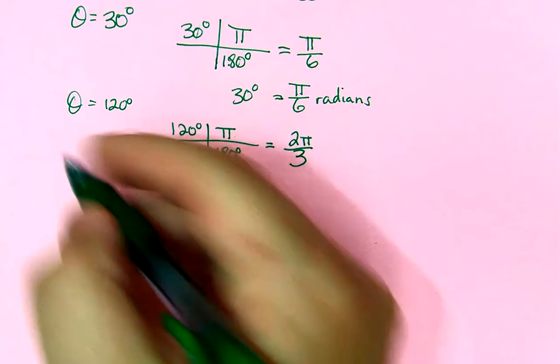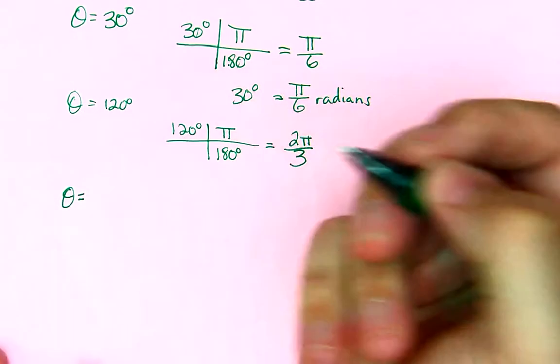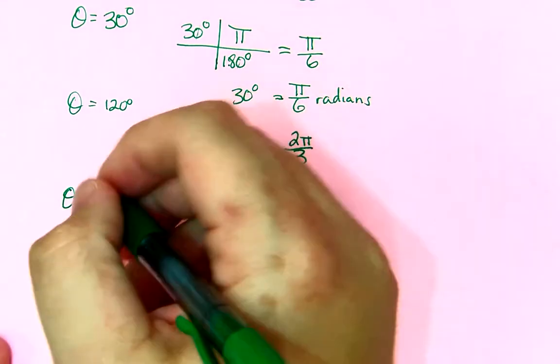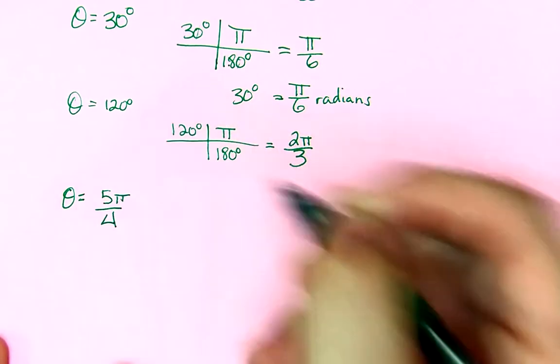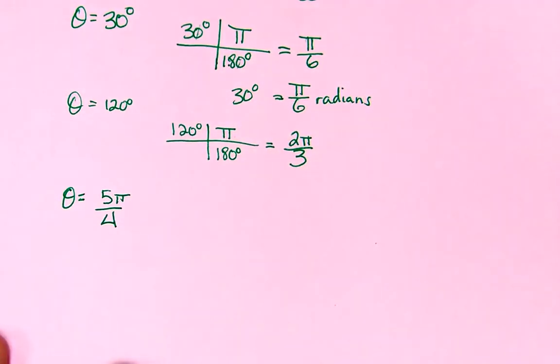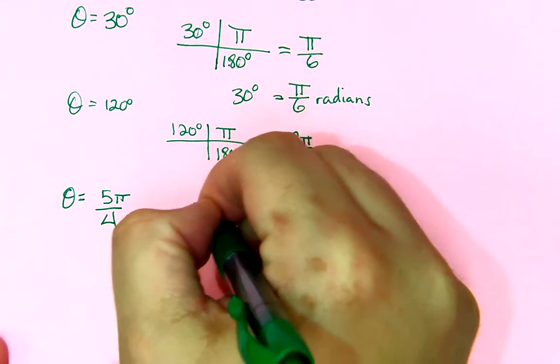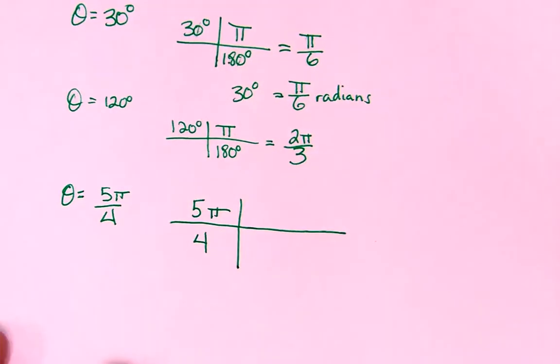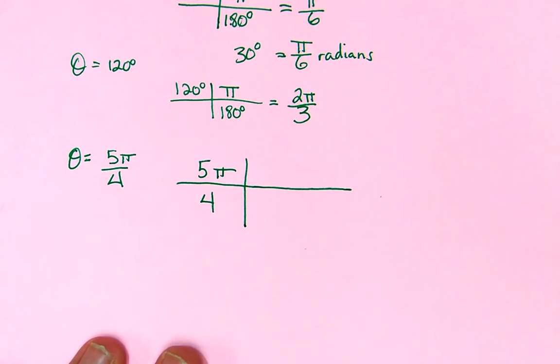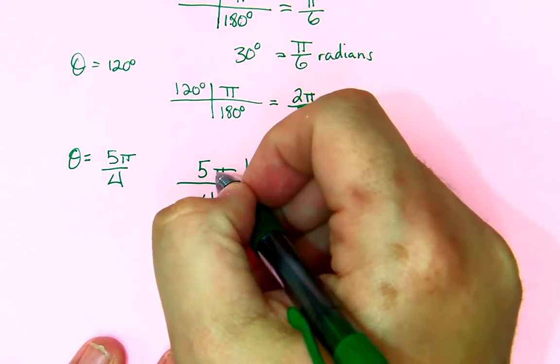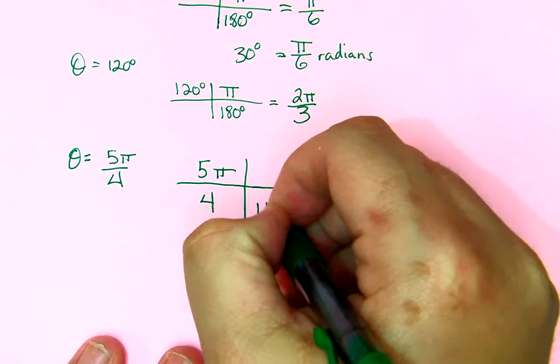Now, if you want to convert the other way, you get your θ is equal to, say 5π over 4. And we want this in degrees. So, you make your train tracks. 5π over 4. And radians don't have a unit. But, since I know π is in the numerator, I want to get rid of π, because there's no π in degrees.